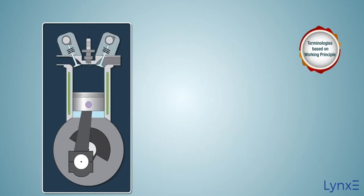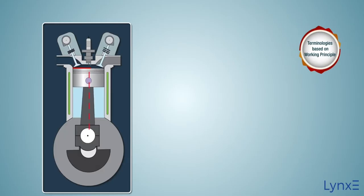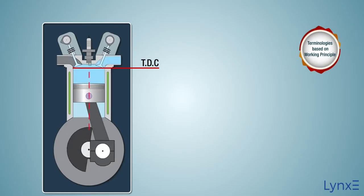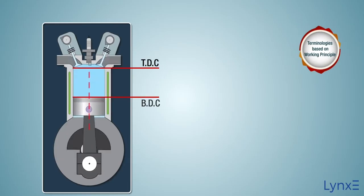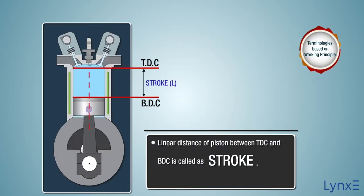The linear distance along the cylinder axis between top dead center and bottom dead center is called the stroke.